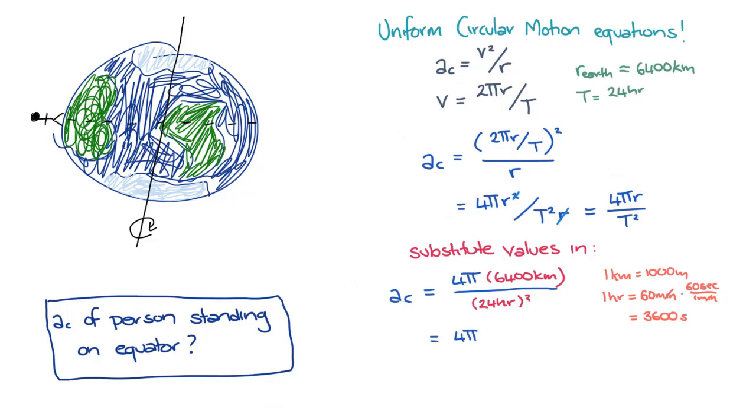So in our expression, replacing kilometer with 1000 meters and hour with 3600 seconds, we find that the total centripetal acceleration of a person standing on the surface of the Earth at the equator is 0.034 meters per second squared. This acceleration comes from the gravitational force of the Earth.